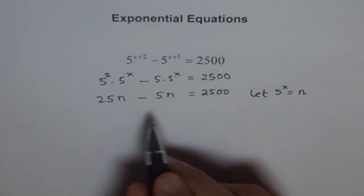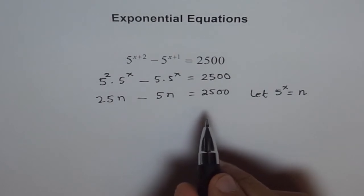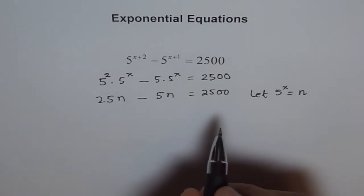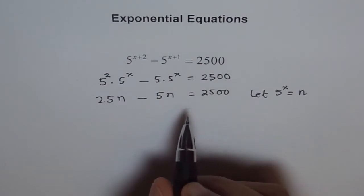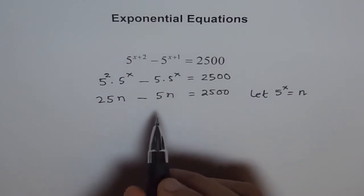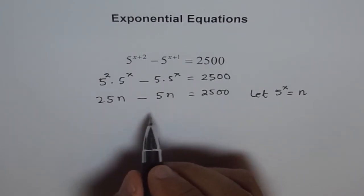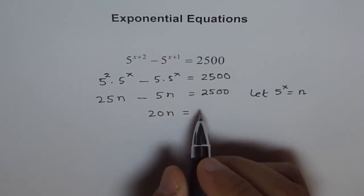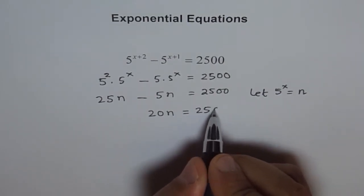Now we can divide by 5 to simplify this equation. So 25n minus 5n is 20n. So we have 20n equals to 2500.